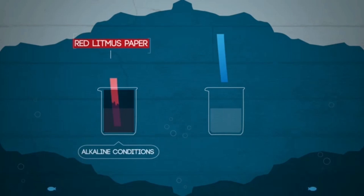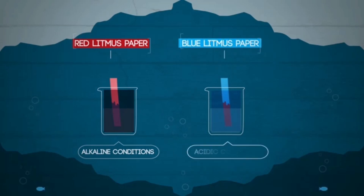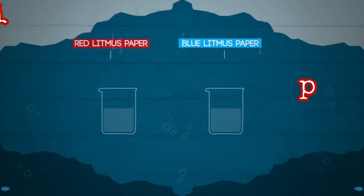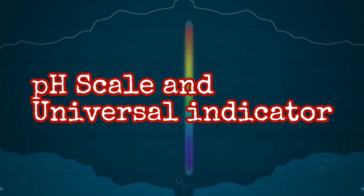However, litmus paper only tells us whether something is acid or alkaline — it does not tell us how acidic or alkaline a substance is. For this, we have the pH scale and the universal indicator.